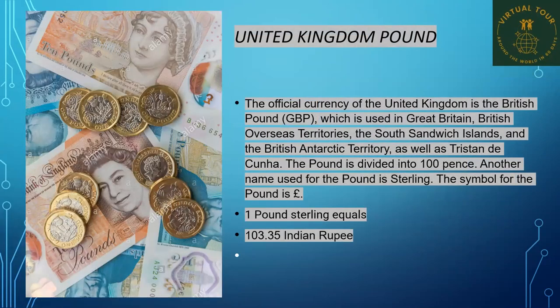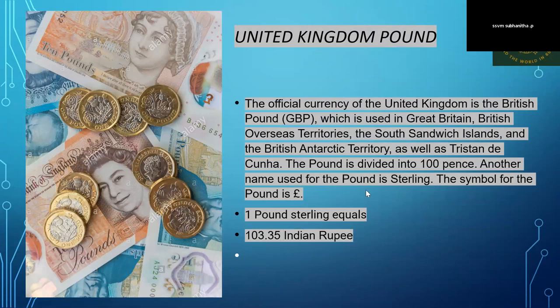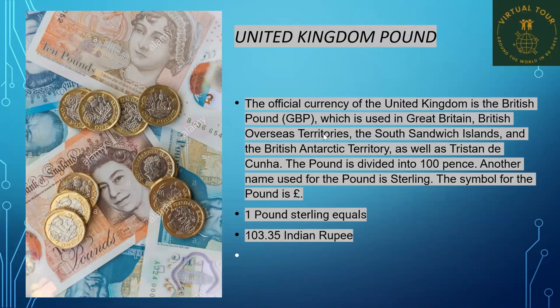The currency of the United Kingdom is the Pound. The official currency is the British Pound, which is used in Great Britain, British Overseas Territories, the South Sandwich Islands, the British Antarctic Territory, and Tristan da Cunha. The Pound is divided into 100 pence. Another name used for the Pound is sterling.